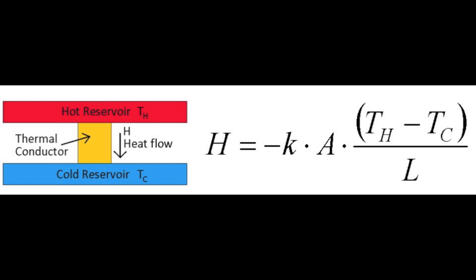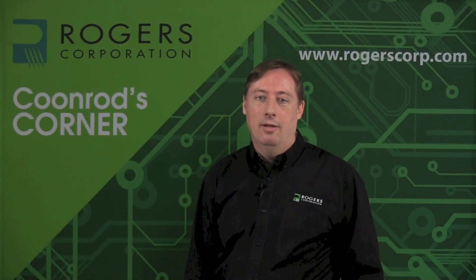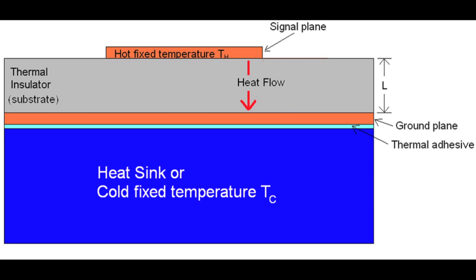The printed circuit board has the same format as the heat flow pattern. You can see that the signal plane is where the heat is assumed to be generated, and then the heat path is going through the substrate to the ground plane.